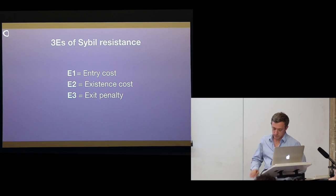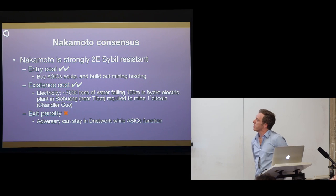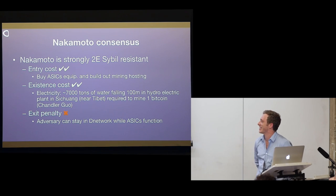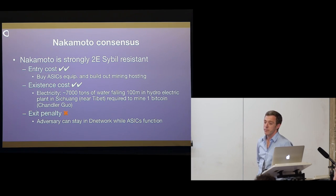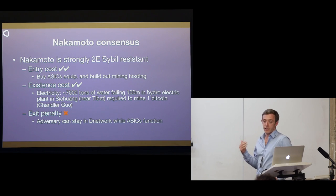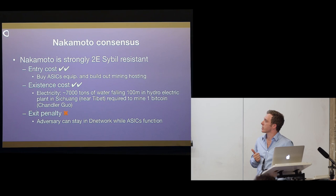Nakamoto consensus is strongly 2E Sybil resistant. We have entry cost — you have to buy basic equipment and build out your mining hosting. We have existence cost: you need approximately 7,000 tons of water falling 100 meters in a hydroelectric plant in Tibet to produce one Bitcoin. That's how much it costs to maintain a presence in the Bitcoin network — it's very expensive. But you don't have an exit penalty. An adversary can stay in the network as long as he has ASICs that function, as long as he can continue hashing. So Bitcoin is strongly 2E Sybil resistant.